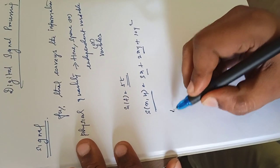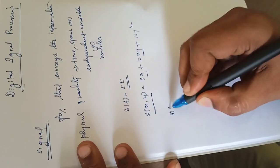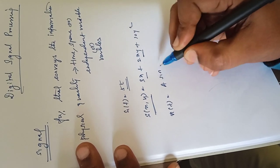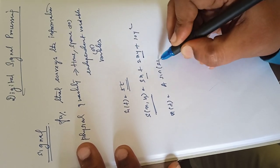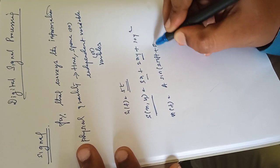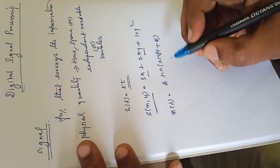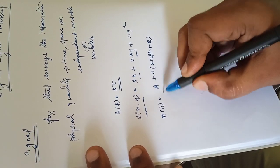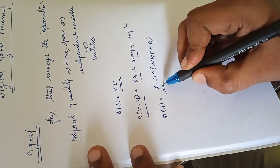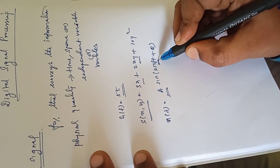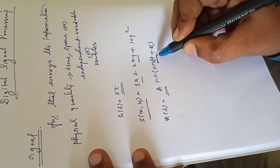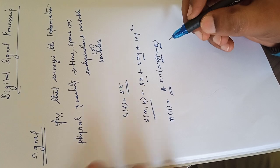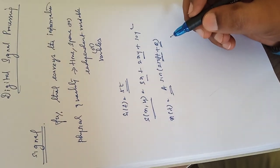The standard signal we can say is x(t) = A sin(2πft + θ). This is the standard signal, where A is the amplitude of the signal, f is the frequency of the signal, t is the time, and θ is the phase angle. So this is the standard signal.